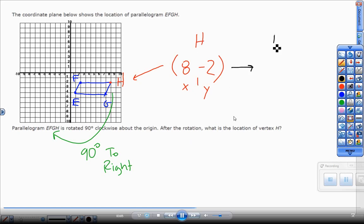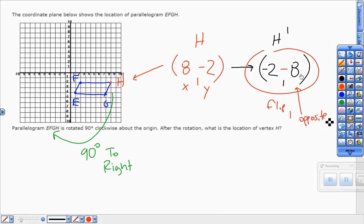I'm sorry, quarter turn to the right: flip the point and make that right coordinate opposite. If this was a quarter turn counterclockwise, clockwise to the left, I would have flipped it and made that left one negative. But again, quarter turn to the right: notice I flipped the points around and I made the right one opposite of what it was.